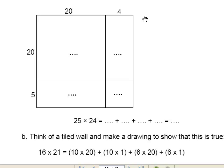And now this is really pushing that relationship. Here's a tiled wall. We can't see the squares, but it can help us to count 25 lots of 24, or 24 lots of 25. And here's a way to do it.